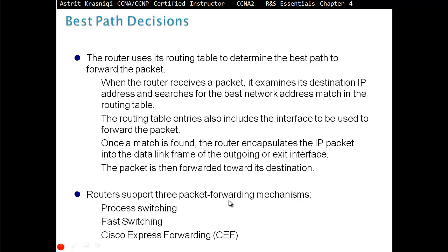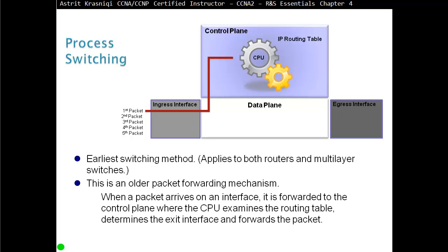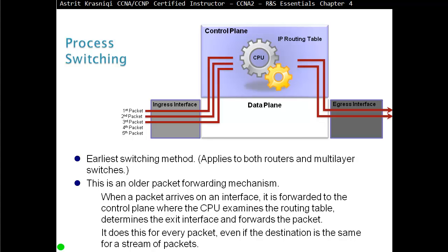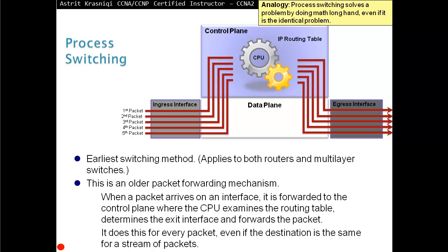Process switching is the first and oldest forwarding method, applying to both routers and multi-layer switches. When a packet arrives on an interface, it is forwarded to the control plane where the CPU is located. The CPU examines the routing table, determines the exit interface, and forwards it. This happens for every single packet — every packet goes to the CPU. This is too much work for the CPU. The analogy is: process switching solves the problem by doing math longhand, even if the problem is identical.